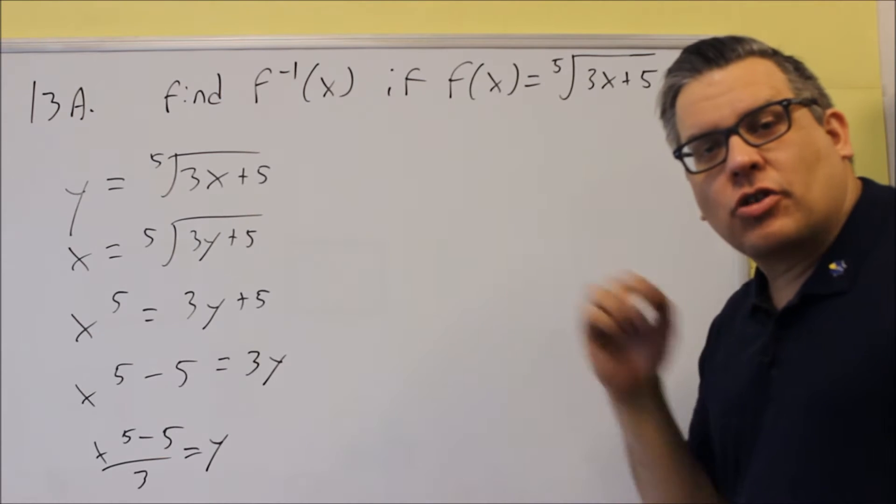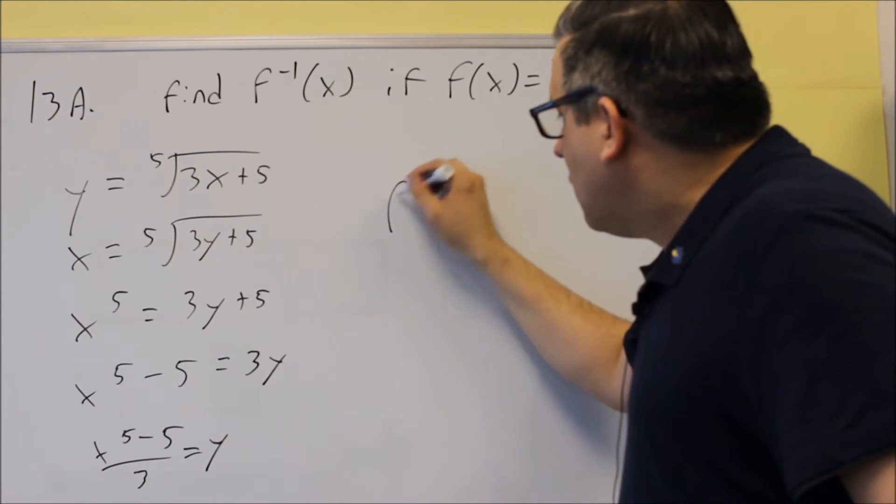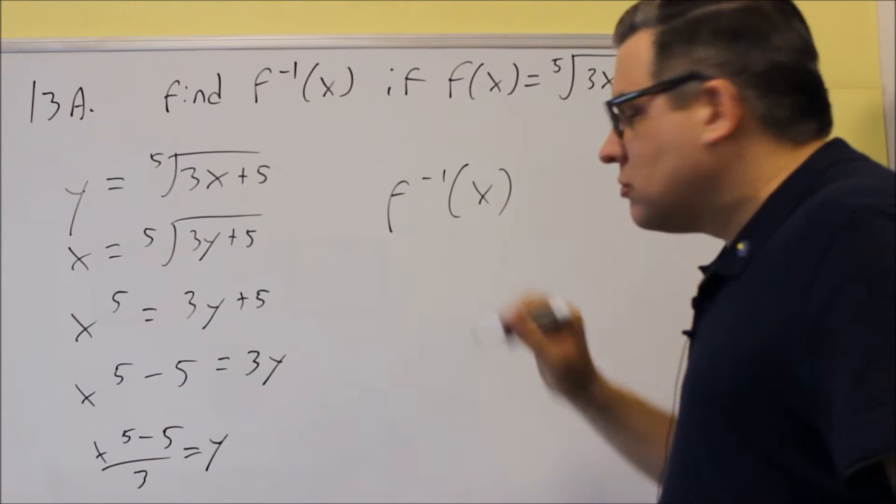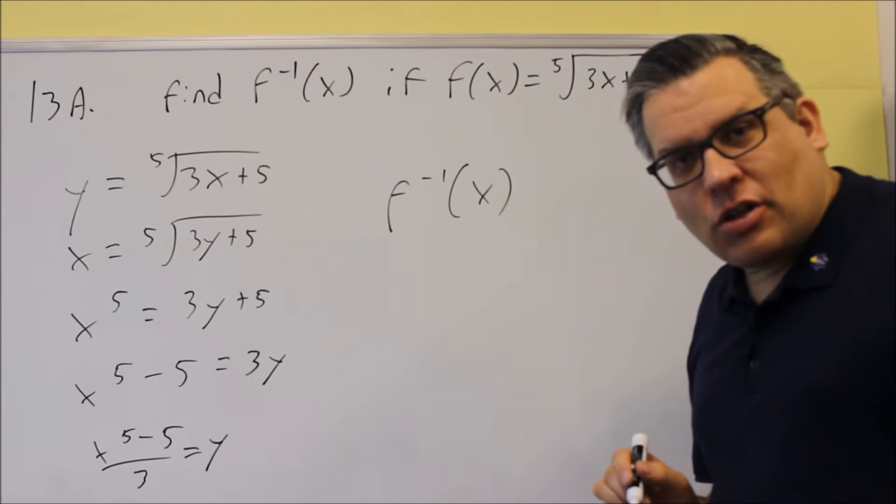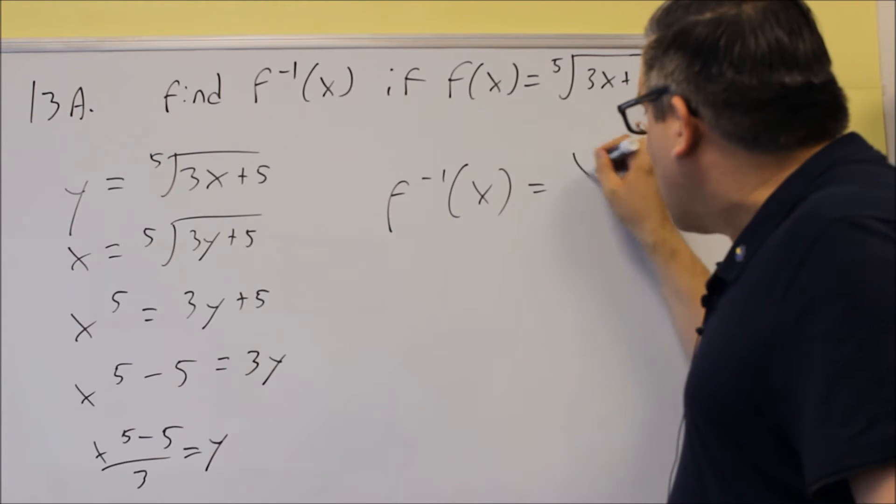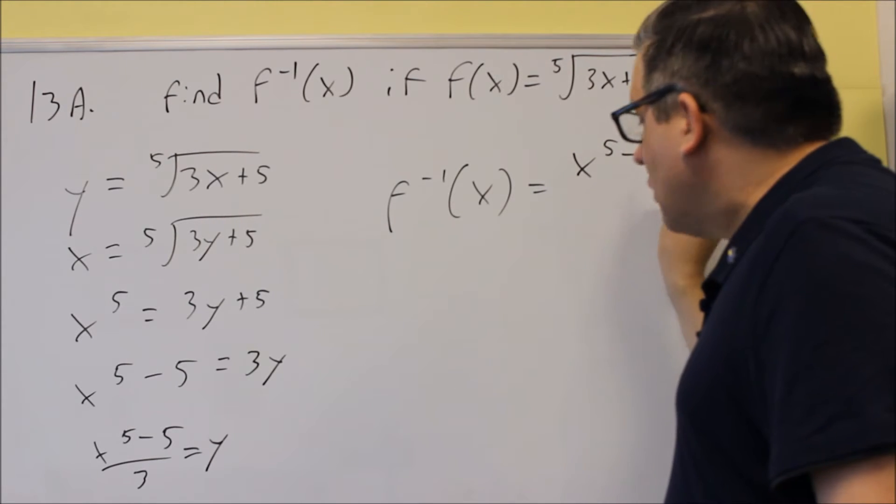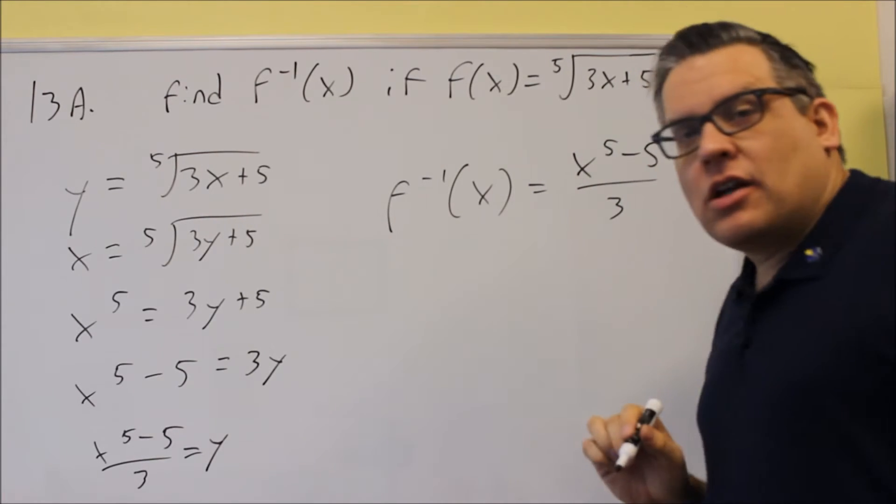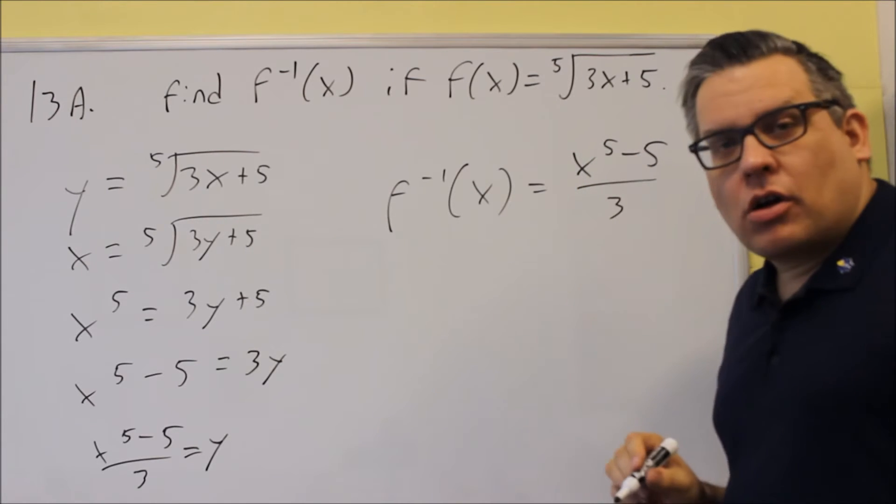What you would put for your final answer, and this would be step number four, is you want to use the proper inverse notation there. So the y gets replaced with the inverse notation. And we just write x to the fifth minus 5 over 3. And so then this would be your final answer.